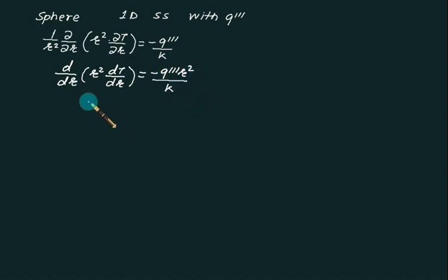So we get R square dT by dR equal to minus Q triple dash R cube by thrice K plus some constant C1.